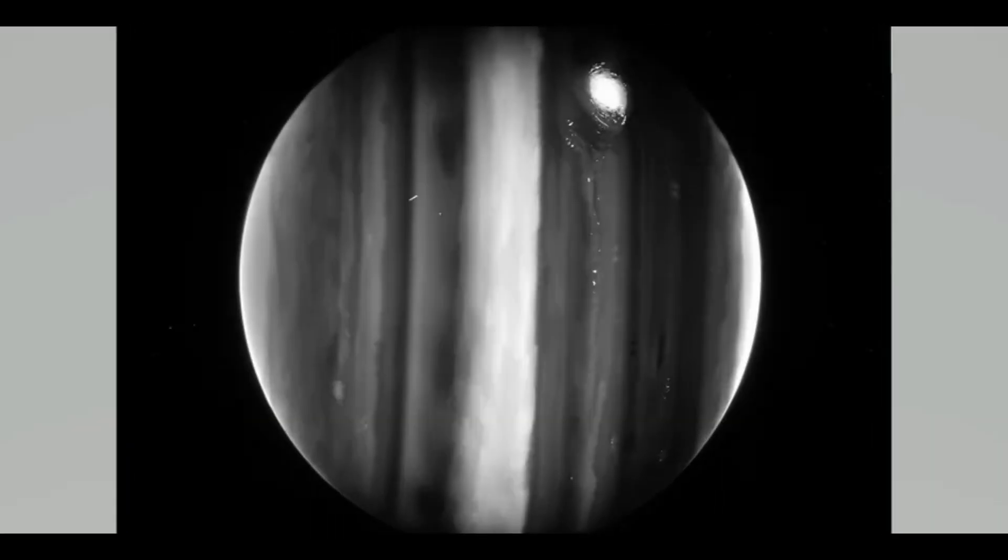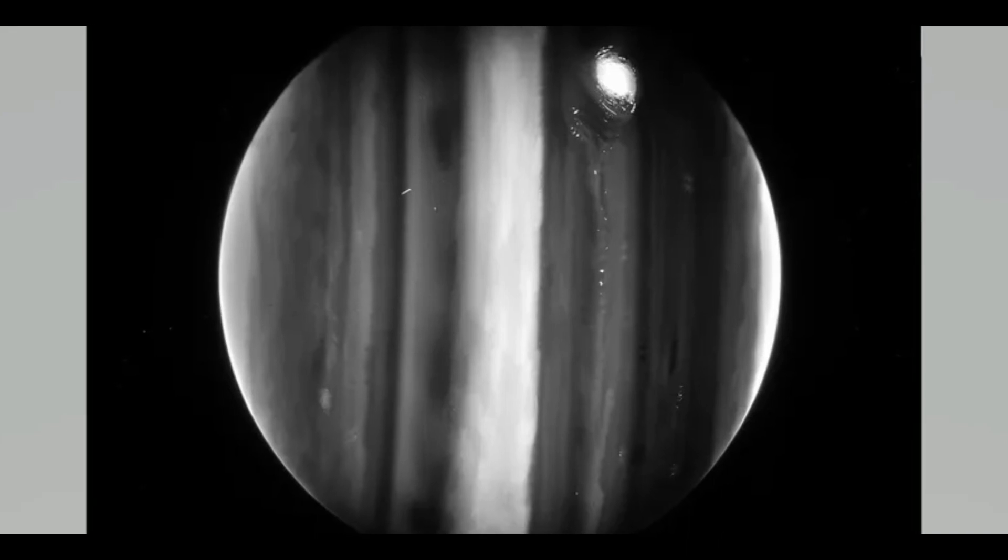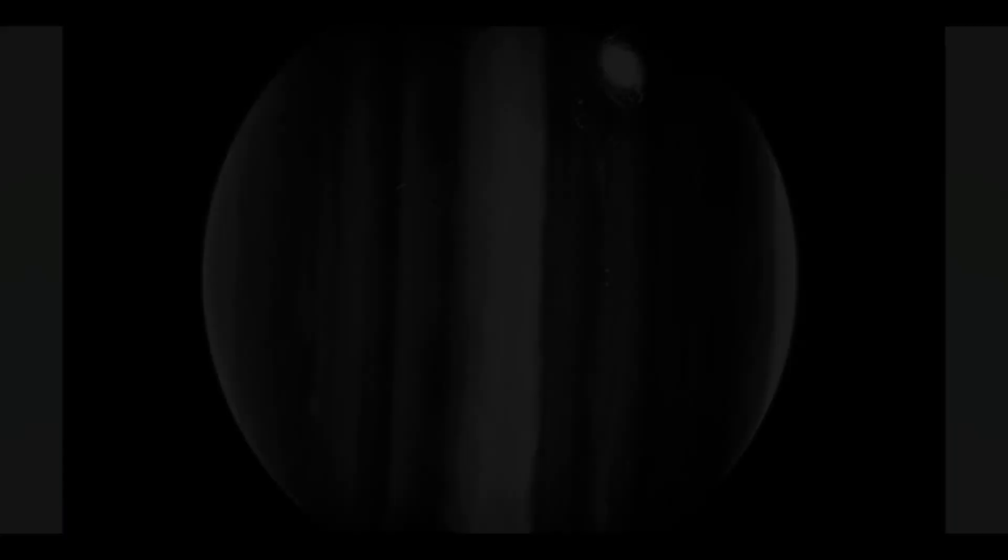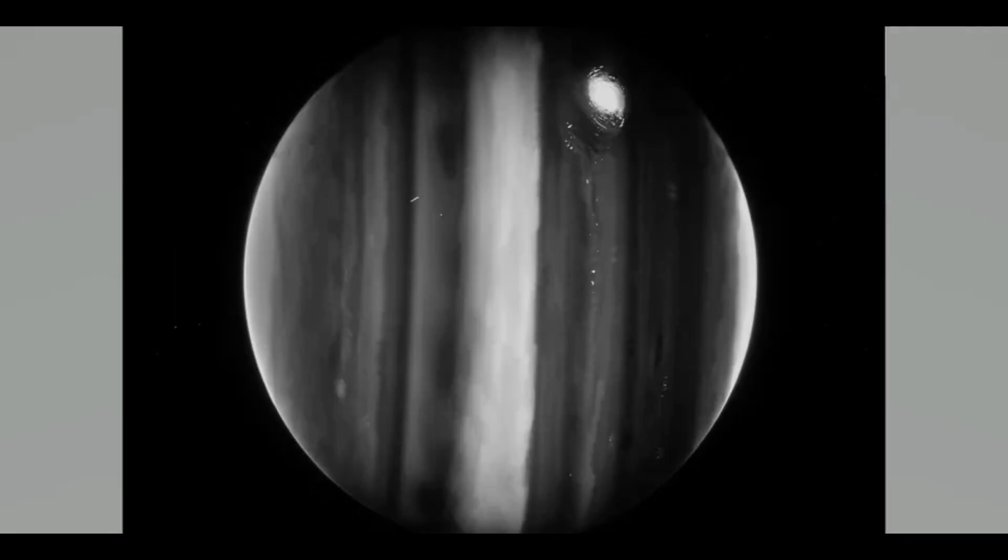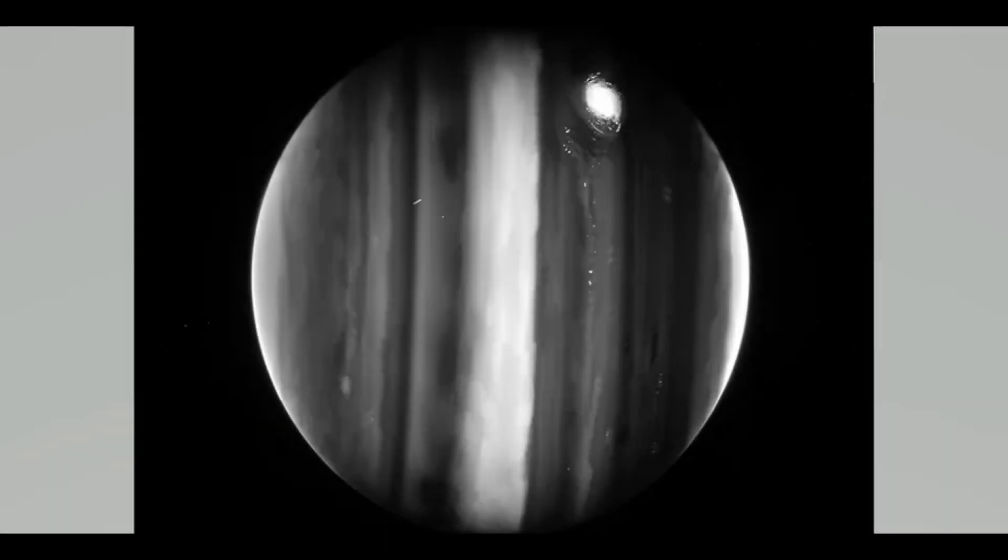That potential can be seen in a raw image captured by the telescope's near-infrared camera instrument, which shows Jupiter's huge storm known as the Great Red Spot, as well as bands in the planet's atmosphere.